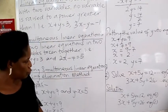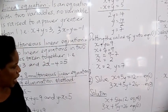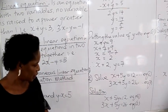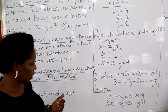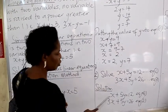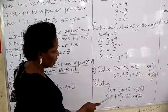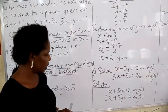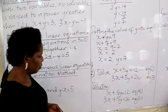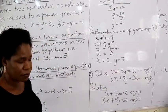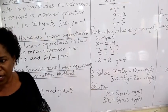Now we move to example 2. Solve: x plus 2y equal to 12, and 3x plus 5y equal to 26 using the elimination method. The two equations have been written with variables aligned — x is under x and y is under y. Now, which variable are we going to eliminate? Let us check x first. The numerical coefficient of x in equation 1 is 1, and in equation 2 it is 3. Since they are not the same, we cannot eliminate x.